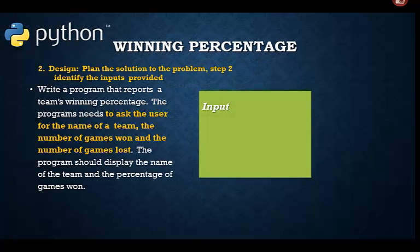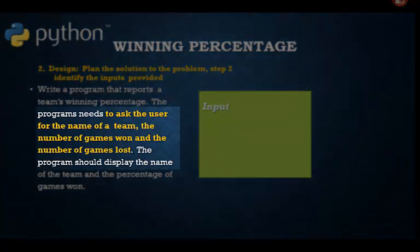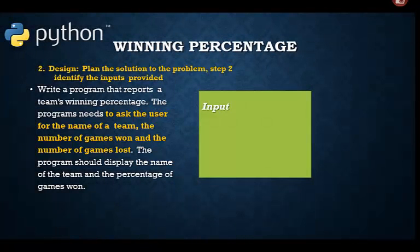Next, we examine the narrative to determine what inputs will be given to the program and where they will come from. We expect the user of this interactive program to provide the team name, the number of games won, and the number of games lost.